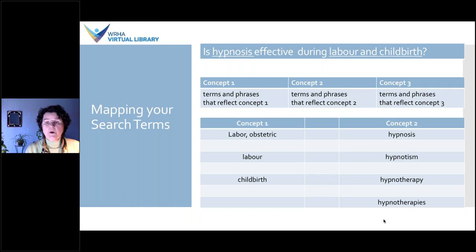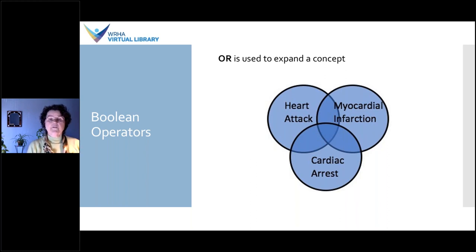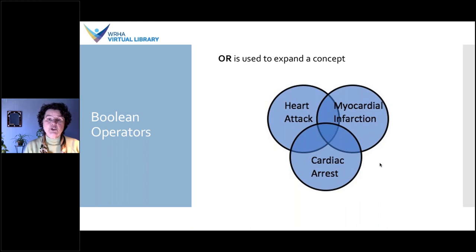Databases use rules known as Boolean operators to help you build your search and combine different concepts in different ways. OR is a Boolean operator used to expand a concept — for example, heart attack OR myocardial infarction OR cardiac arrest will find all the information in the circles as well as in their intersections. It really broadens the search, so you don't want to overdo it with the number of terms — use what is most logical and keep it as specific as possible to your question.